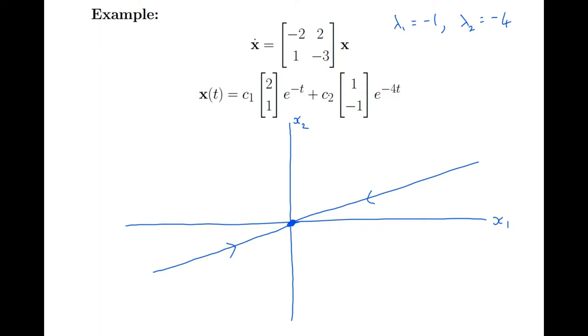Now, I'll draw the solution that goes with the other eigenvector. It's in the direction [1, -1]. And that solution when C1 is 0 always points out in that direction and it goes to 0 even more rapidly like e to the minus 4t. So, I'd be able to draw a double arrow there to say it's really going in much faster towards 0 along that.